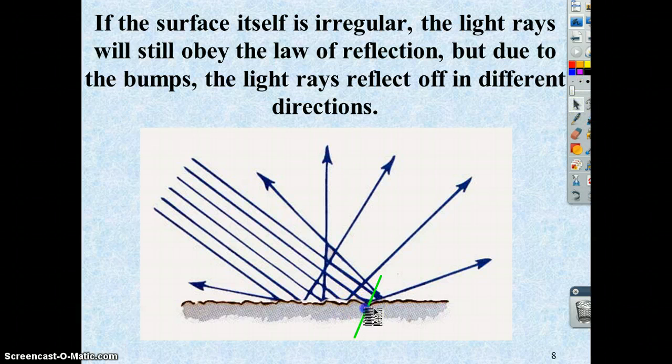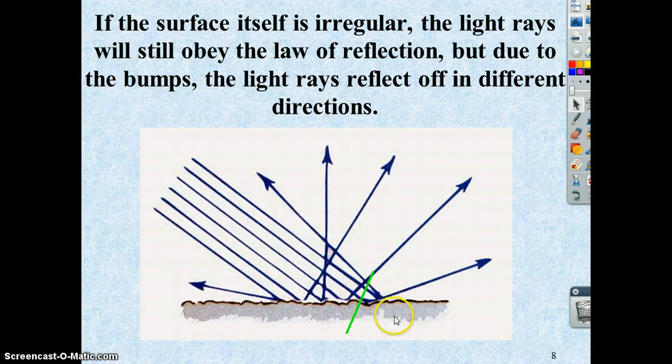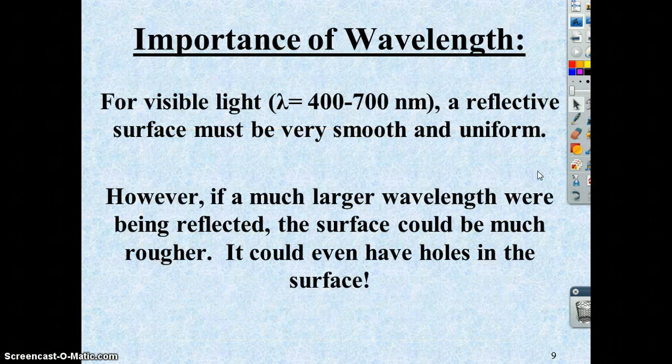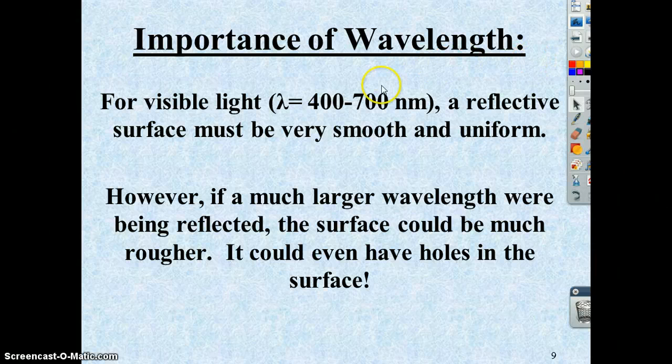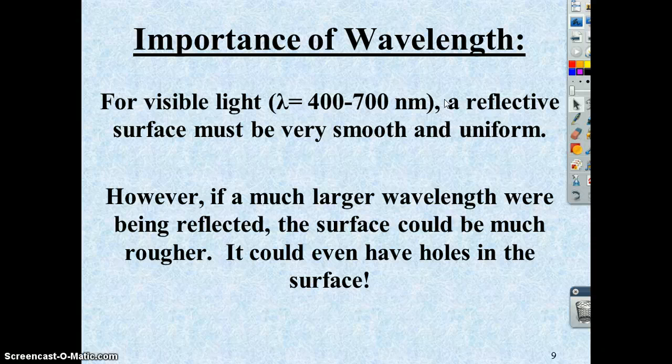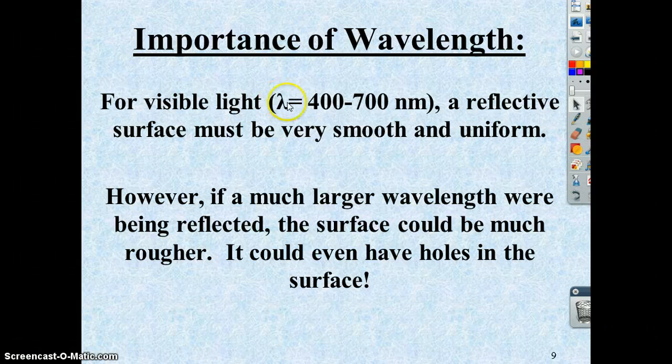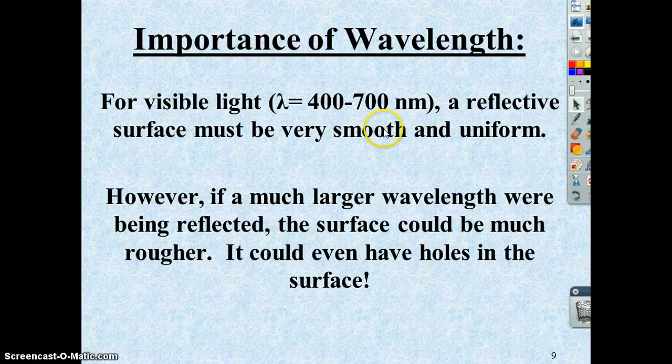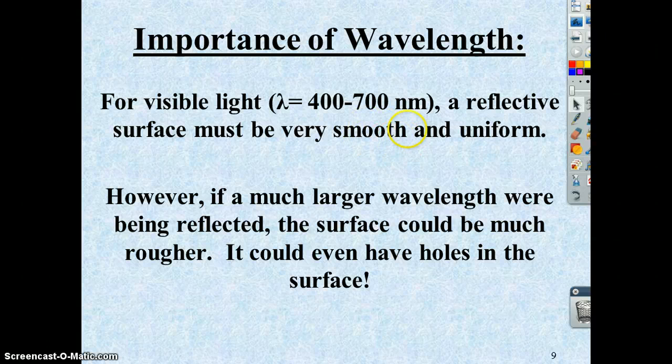Now, wavelength of light is a very important factor in whether or not something will reflect off of it. Visible light has very, very small wavelengths, on the order of 400 to 700 nanometers. So you would need to have a surface that was smooth over those distances in order to reflect the light.